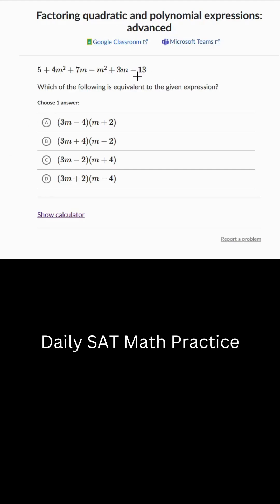SAT math problem, let's go! 5 minus 13 equals negative 8, so let's write that. 3m plus 7m equals 10m, so let's write that. 4m squared minus m squared equals 3m squared. So we have 3m squared plus 10m minus 8. How do we factor this?